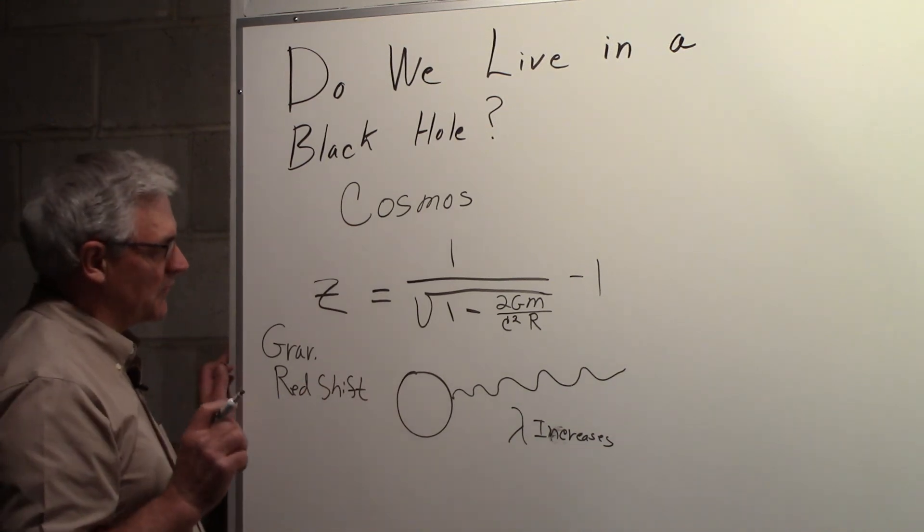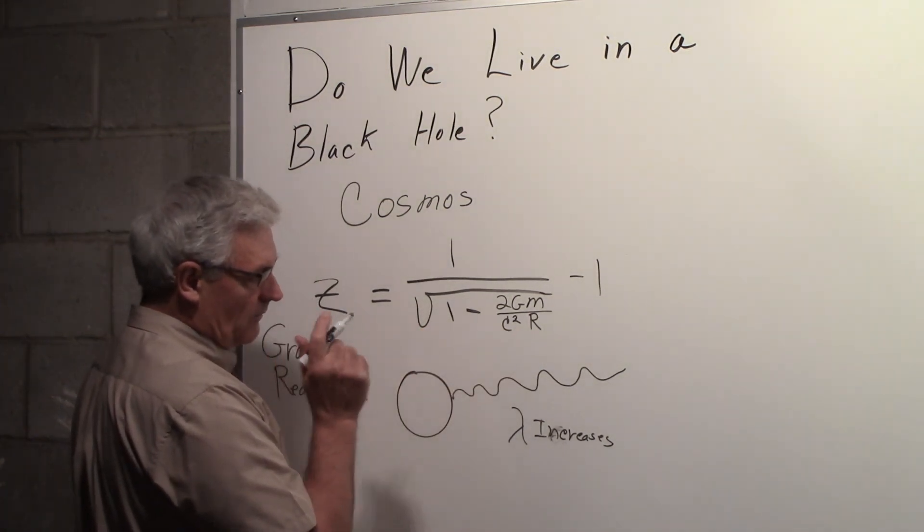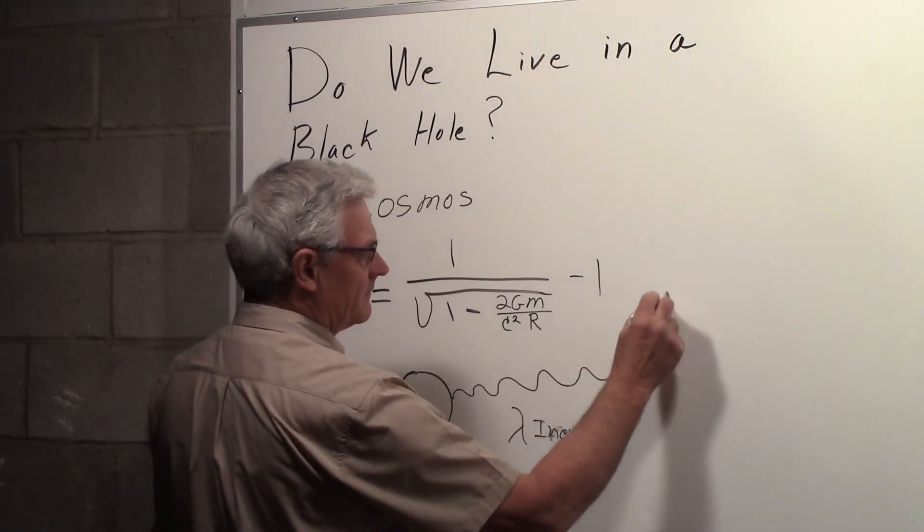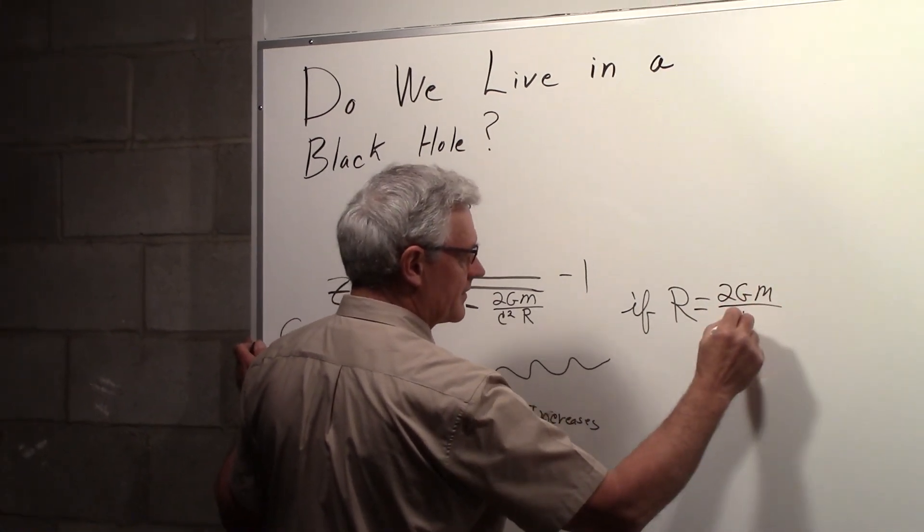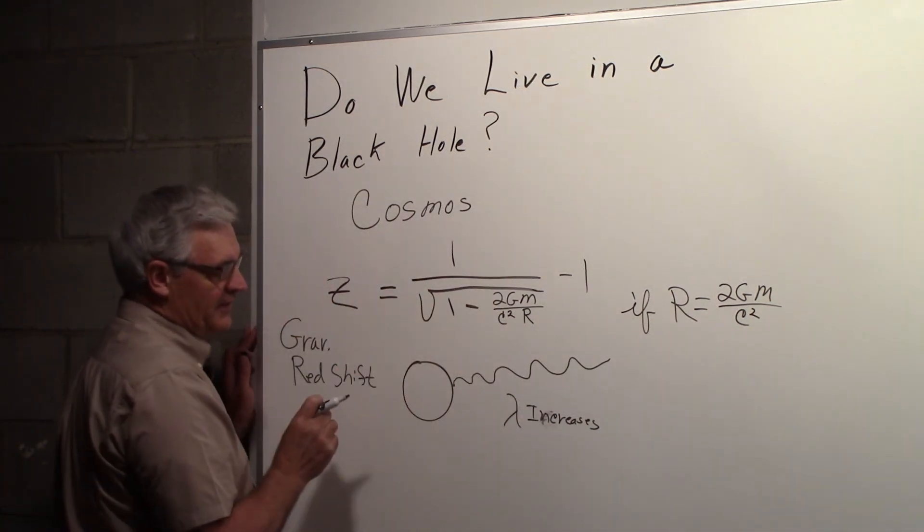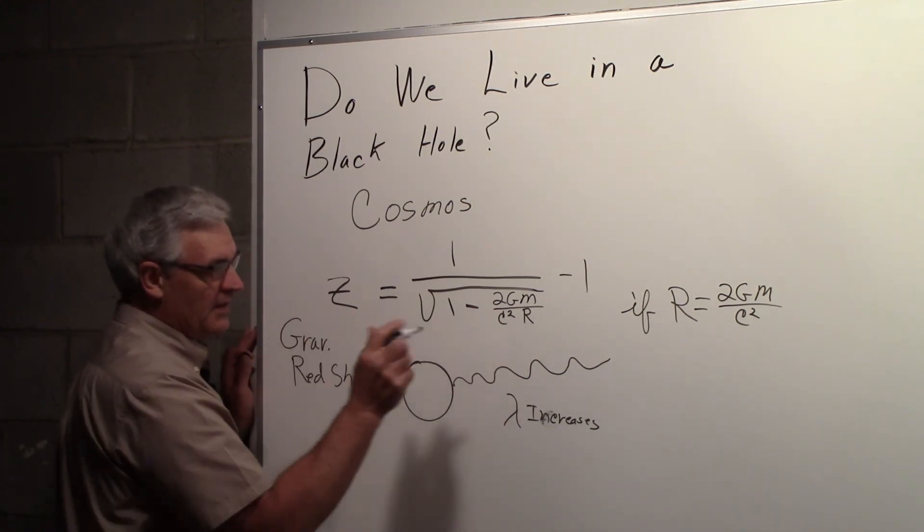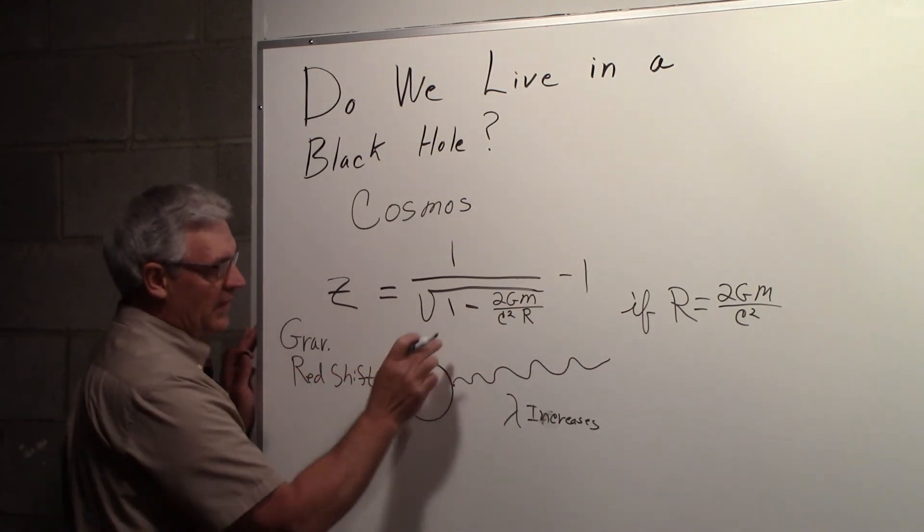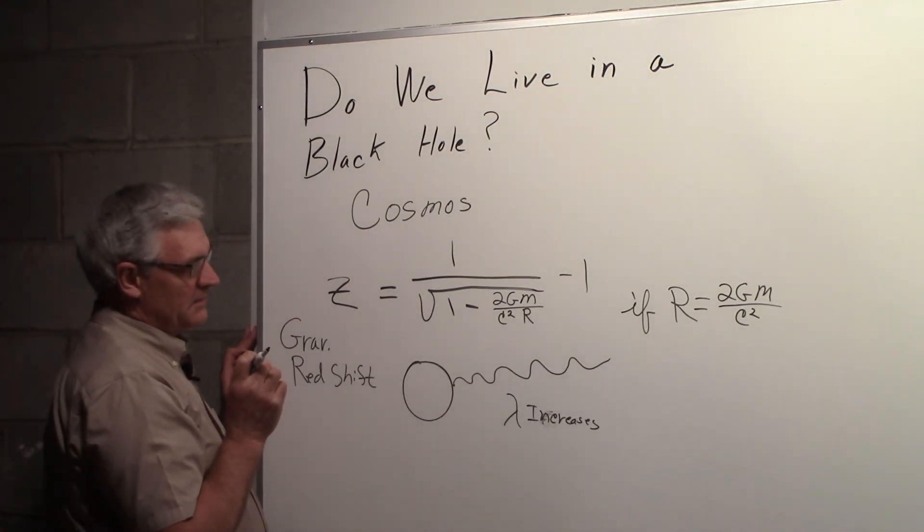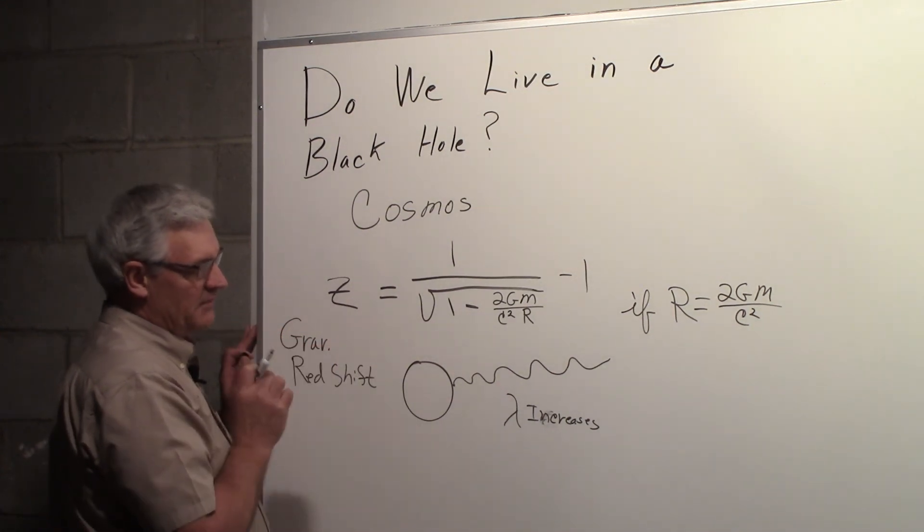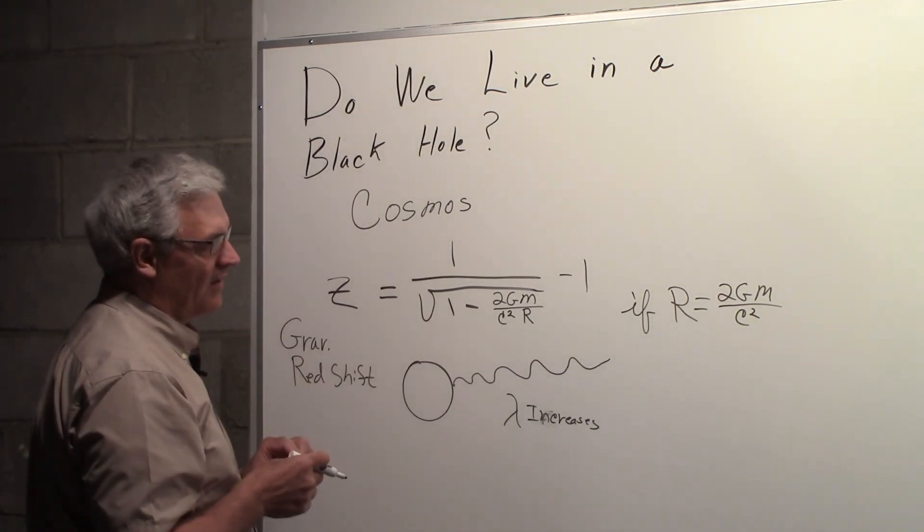Well, what's interesting is if you take a look at this equation and you say to yourself, what happens if r equals 2GM over c squared? G is the gravitational constant, M the mass of the body, r the distance out, and c the speed of light. If we put r equal to that, we get 1 minus 1, and so z blows up to infinity.